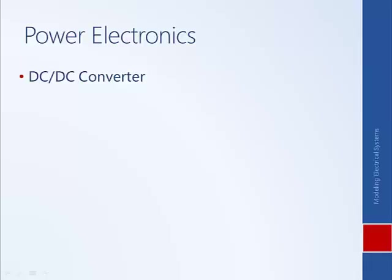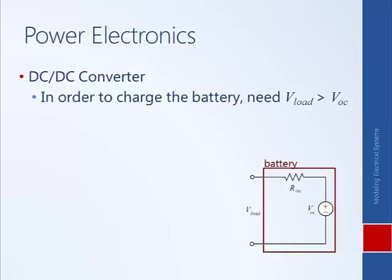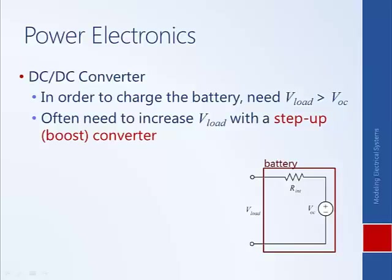One example of where this is necessary is in charging a battery. In general, in order to charge a battery, the voltage being applied to the battery needs to be higher than the open circuit voltage of the battery. If we had a braking event with regenerative braking driving a generator, we wouldn't be able to charge the battery for small braking events because the voltage would be too low. But we can use a step-up or boost converter to increase the voltage from the generator to a high enough level to actually charge the battery.